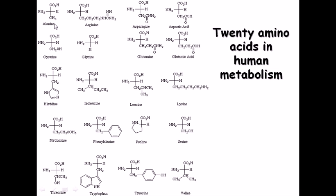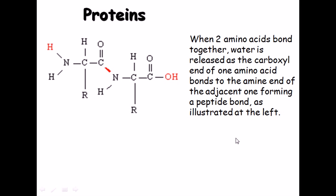Depending upon the nature of the R group, the amino acid could be hydrophobic, hydrophilic, positively charged, or negatively charged. When two amino acids bond together, water is released — the carboxyl end of one amino acid bonds to the amine end of the adjacent amino acid to form a peptide bond. Condensation occurs and amino acids link with each other to produce proteins.